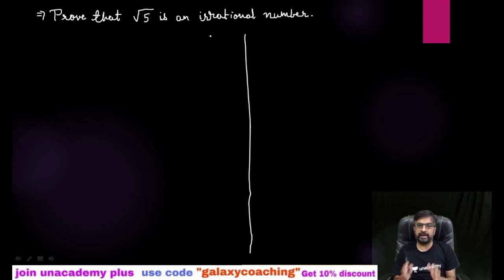Directly we cannot prove any term as irrational number. So what we are going to do? First of all, we are going to suppose this as a rational number and then we are going to find out some mistakes in that. So we can say that that number is not rational, and if that number is not rational, obviously that number will be irrational number. So let us start the solution.